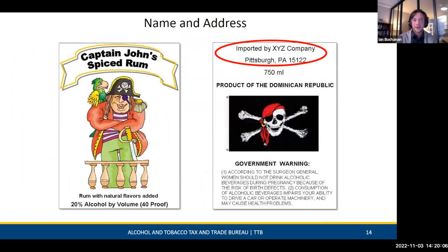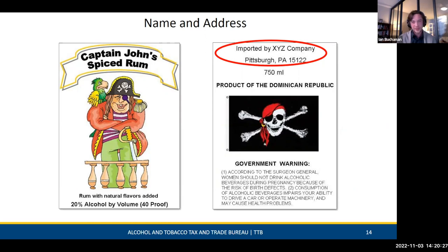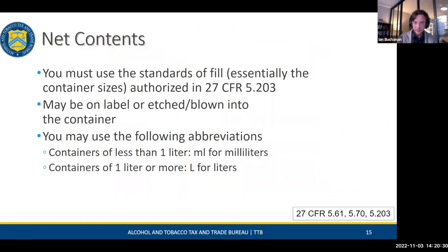On the label example, you see the spiced rum was imported with the importer of record XYZ Company, Pittsburgh, PA. ZIP code is optional — you can add it but don't have to. Just make sure it aligns with the information in the name and address section.